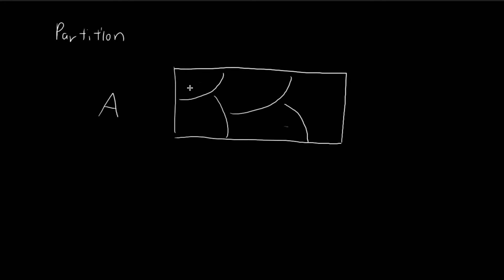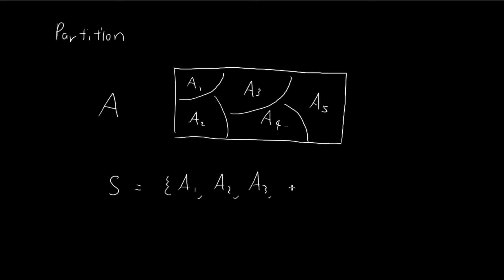Elements falling within each region form subsets: A1, A2, A3, A4, and A5, where each Ai is a subset of A. We can then define a set S containing all of these subsets — A1, A2, A3, A4, and A5 — and this set S will be a partition of A.